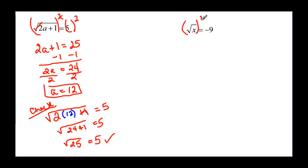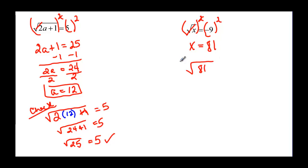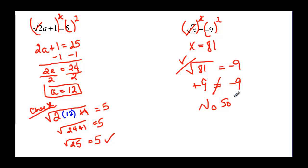Over here we can square both sides. The square cancels the square root leaving us with x, and negative 9 times negative 9 is going to be 81. Then we look at it and say: is the square root of 81 equal to negative 9? No. The square root of 81 is positive 9, and positive 9 does not equal negative 9. So here we have no solution — and now you can see why you have to check.